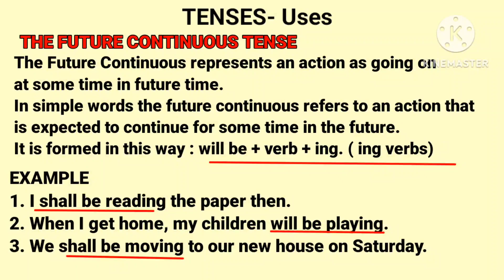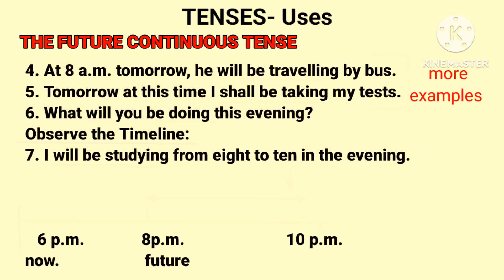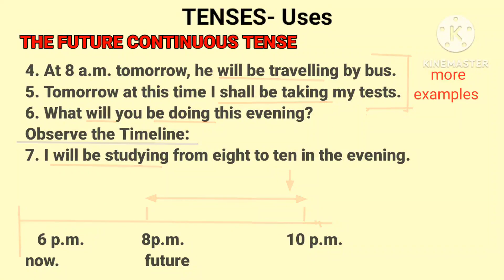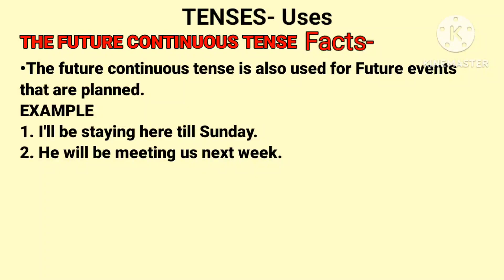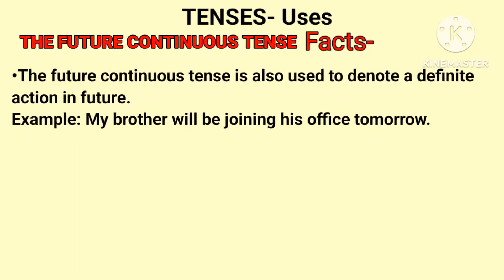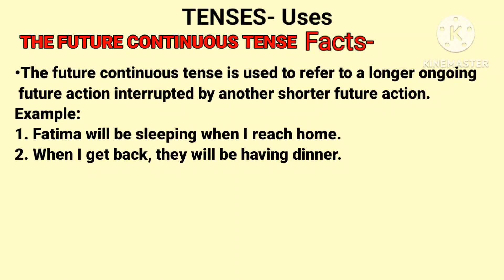When I get home, my children will be playing — 'will be playing' is future continuous tense. We shall be moving to our new house on Saturday. I will be studying from 8 to 10 in the evening — this refers to an action scheduled at a specific time in the future that will continue for a definite period. The future continuous tense is also used for planned future events. For example: I will be staying here till Sunday. My brother will be joining his office tomorrow.